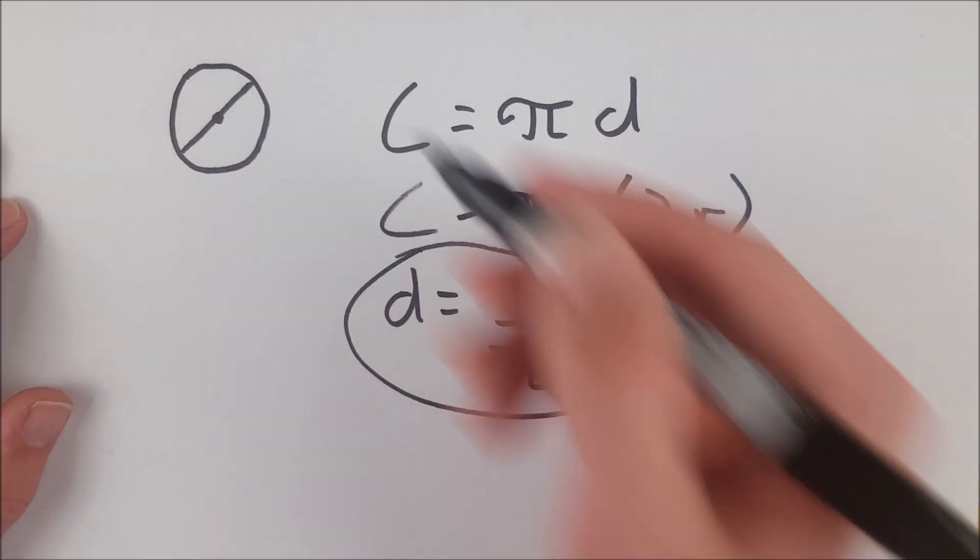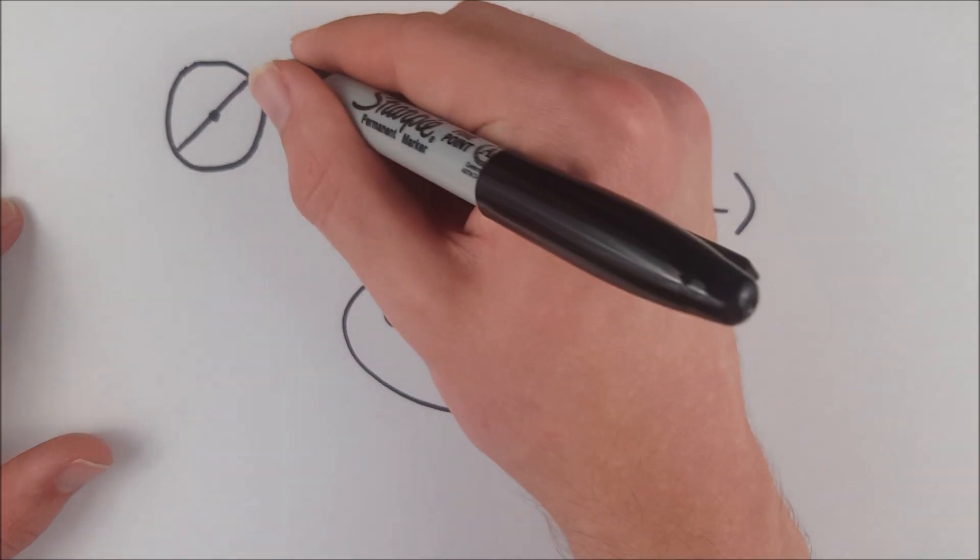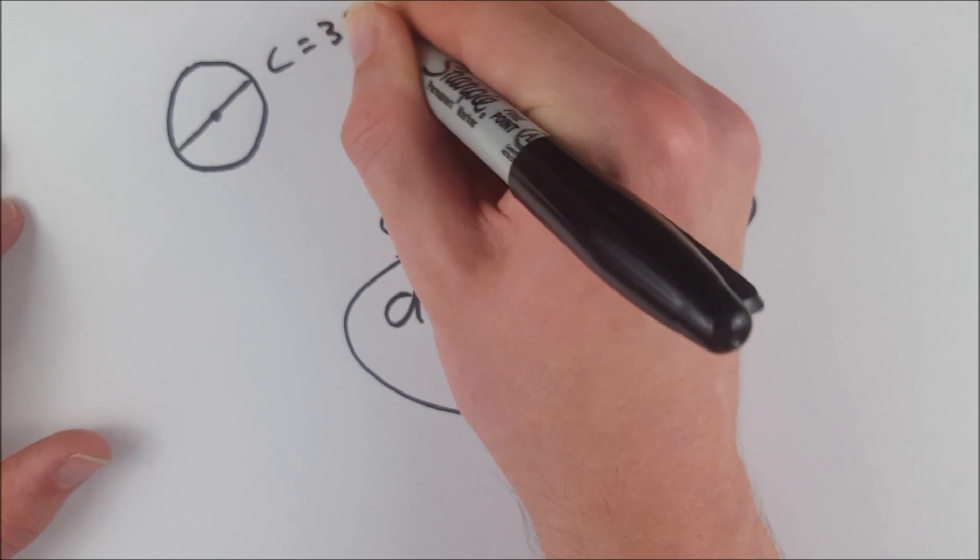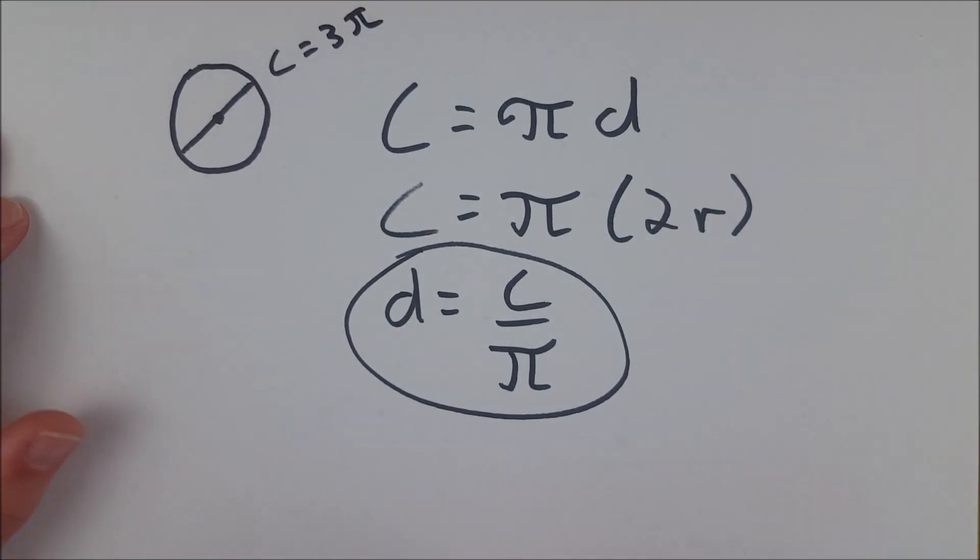So let's say that the circumference of this circle here just so happened to be equal to 3π. Can you see that? Yes you can. That's in the frame.